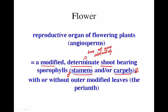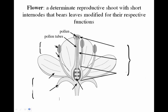Flowers can have outer modified leaves around them — the sepals and petals — and those are called the perianth, which means 'around the flower.' We've already seen those parts of the flower, so we'll just label them again quickly. We have the receptacle at the base, the sepals, and the petals, which together are the perianth.